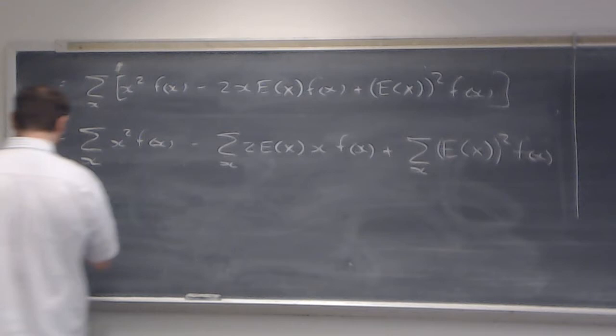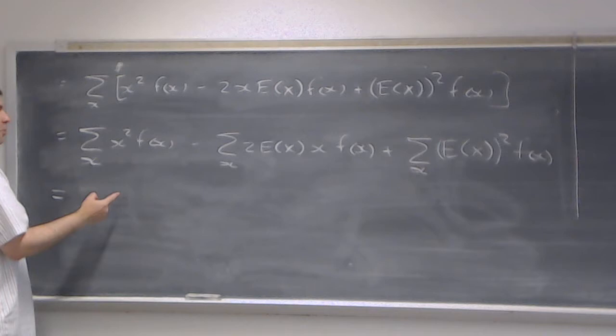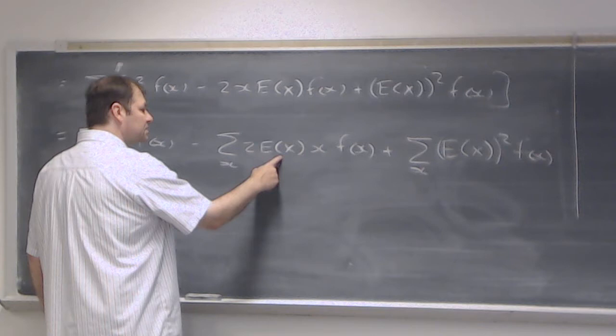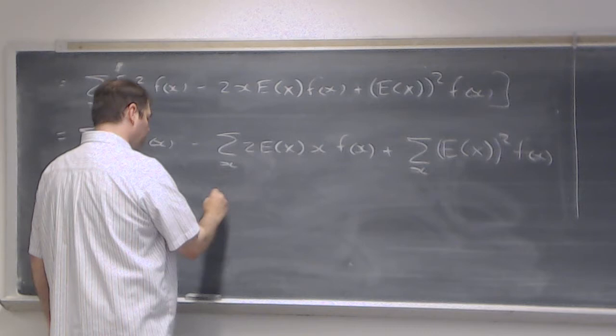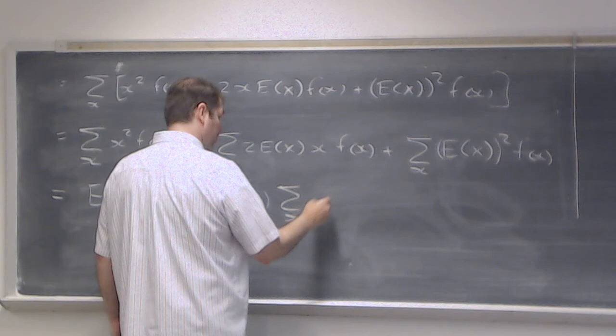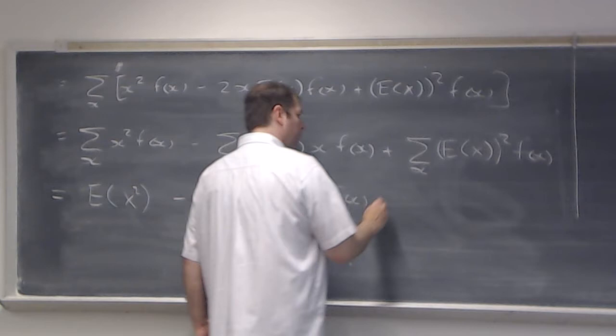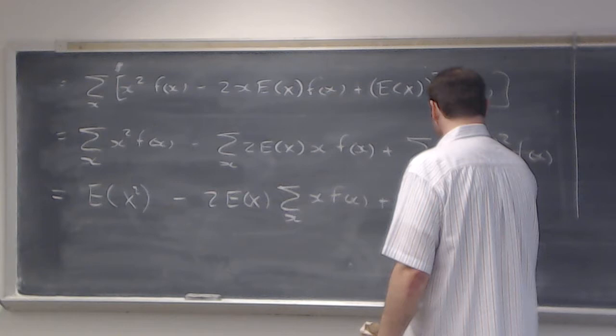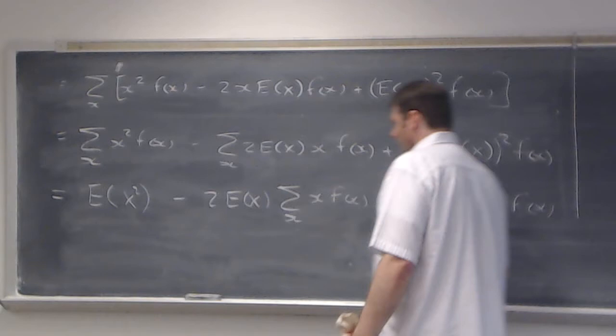By the formula for the expected value of g(x), the first sum is the expected value of x squared. Now E[x] is a constant, and so is 2, so I can pull them out. I still have the sum over x of x·f(x), plus E[x]² — a constant — times the sum over all x values of f(x).